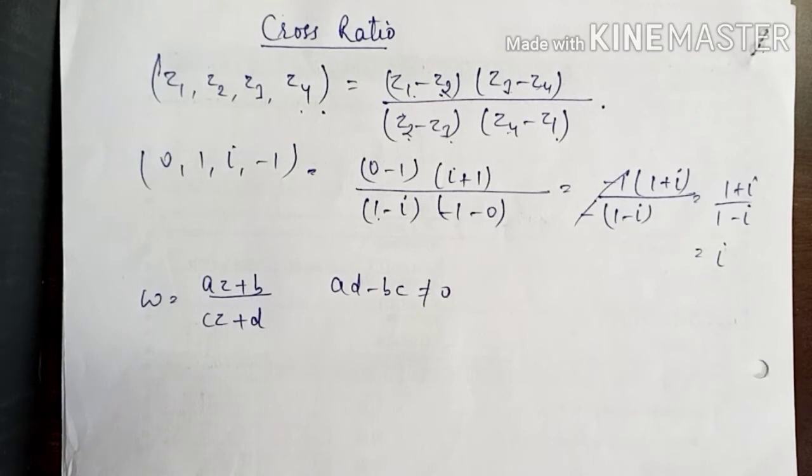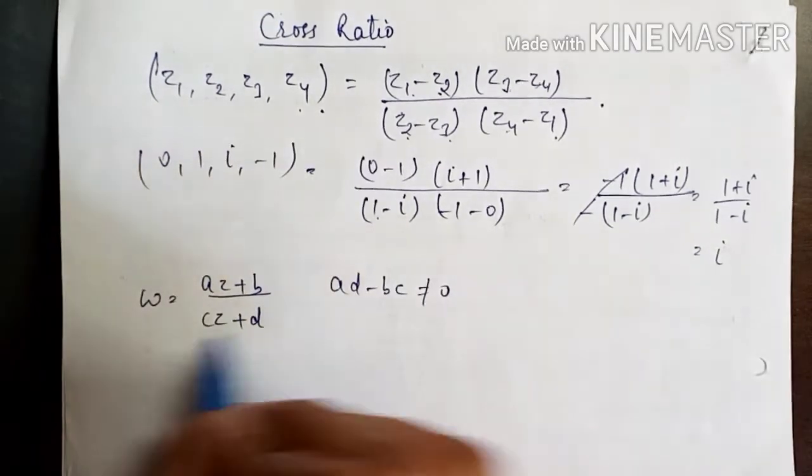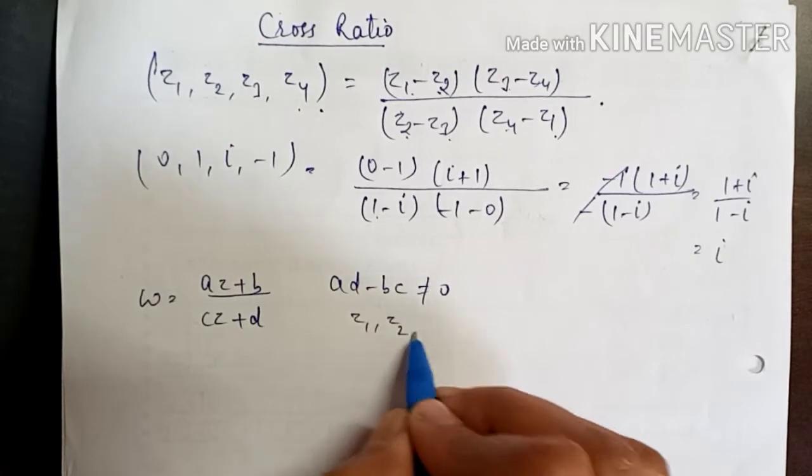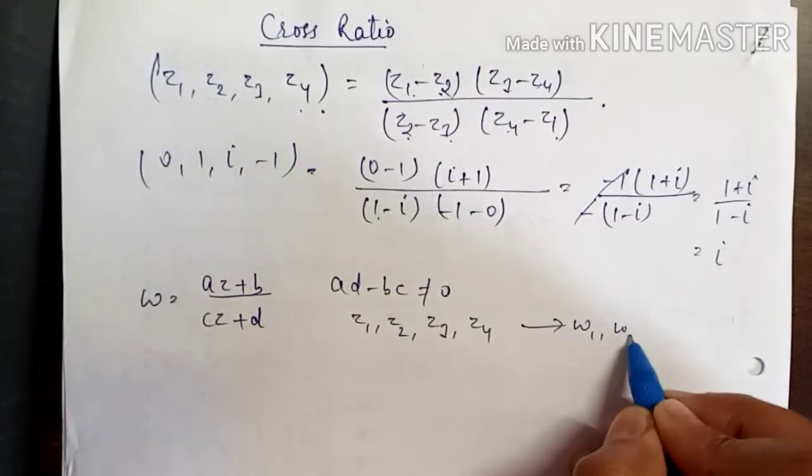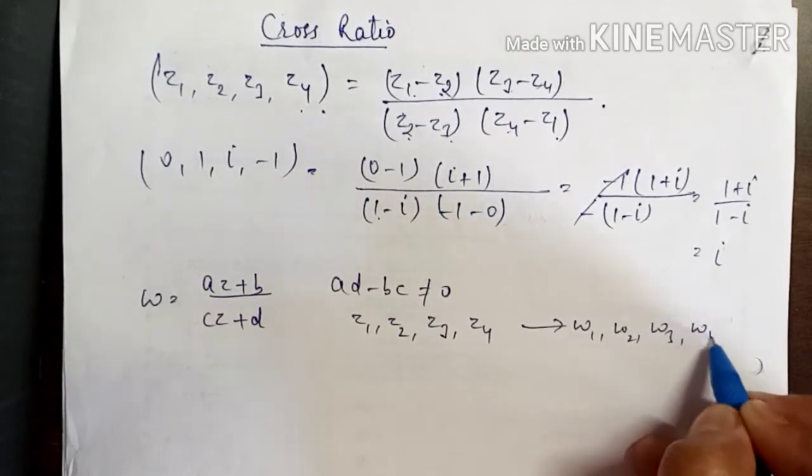If we have some Möbius transformation, then this Möbius transformation transforms four points Z1, Z2, Z3, and Z4 to W1, W2, W3, and W4.